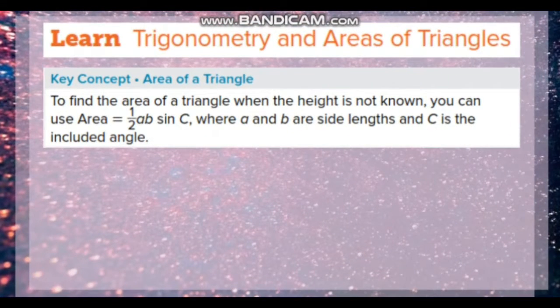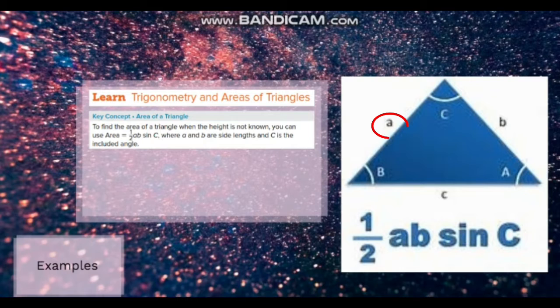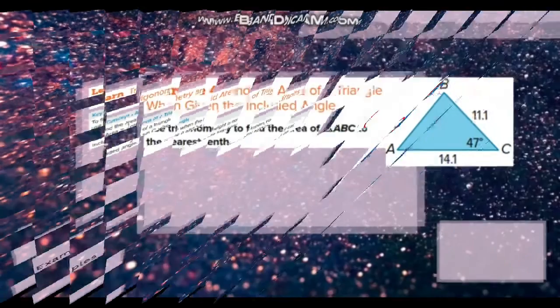One of the important applications of trigonometry is finding the area of a triangle if you are not given the height. You can use area equals half AB sine C, where A and B are side lengths and C is the included angle.